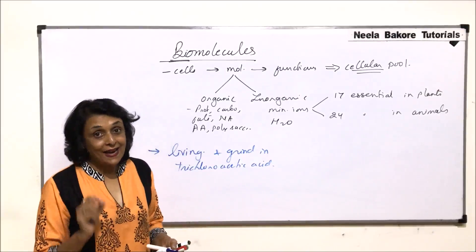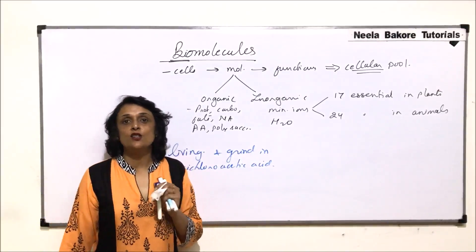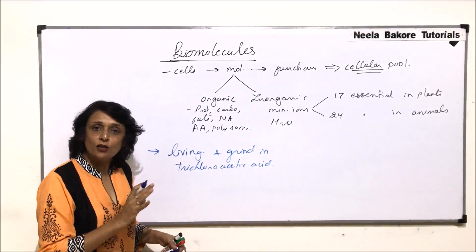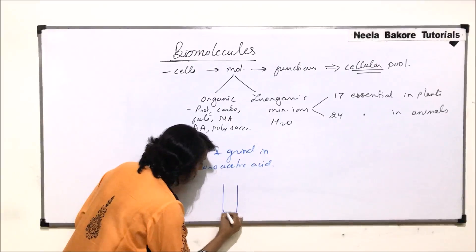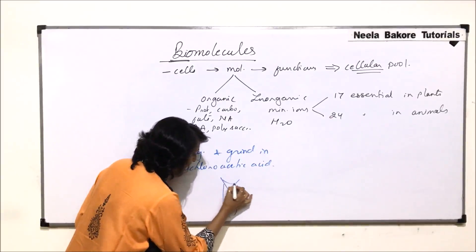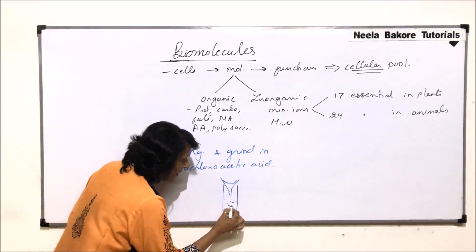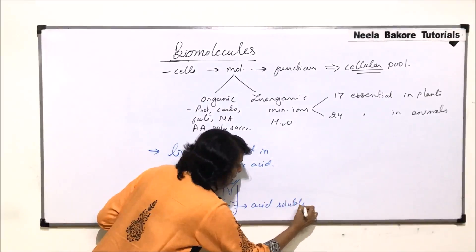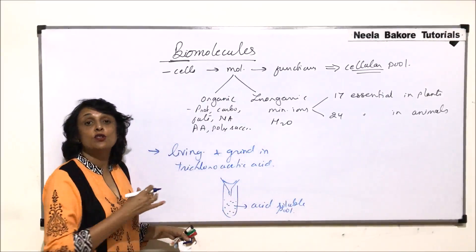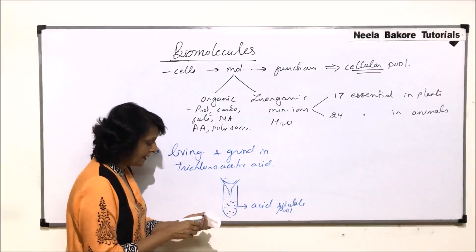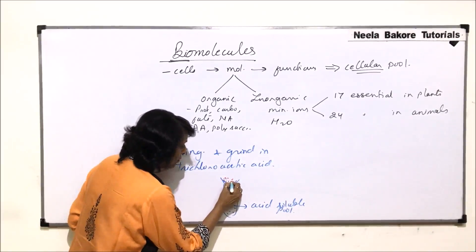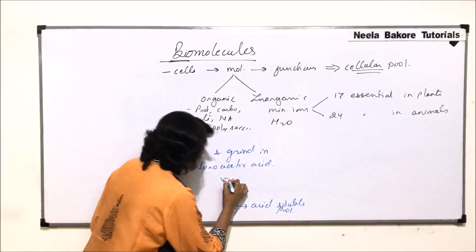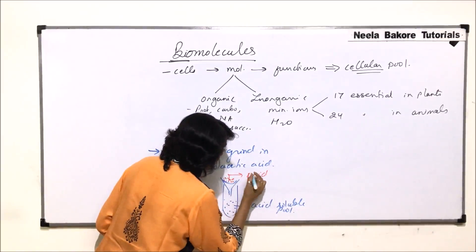The filtered fraction is called the filtrate, or technically the acid-soluble pool. For example, we take a tissue, grind it in the acid to make a slurry, then filter it through a funnel with cotton into a test tube. What passes through is the filtrate — the acid-soluble pool. The material remaining on the cotton that did not dissolve in acid is known as the acid-insoluble pool.